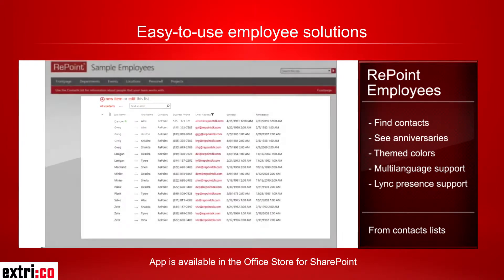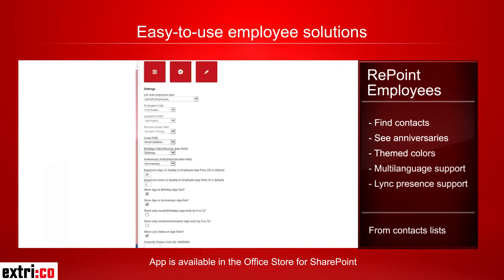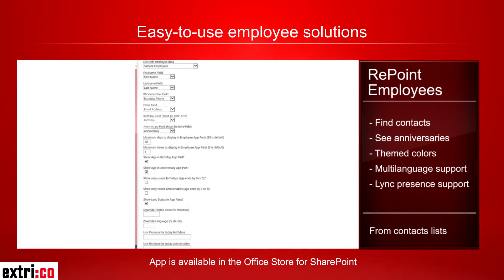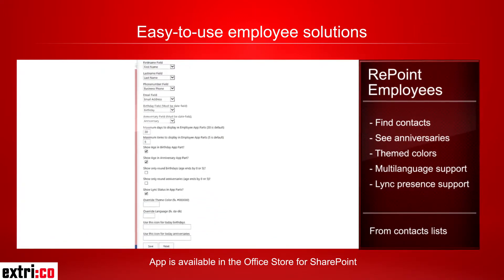You can adjust the app parts configuration centrally to make them fit your needs. The dropdown menus enable you to choose from which list and fields to use, and you can select how to display the information on your sites.